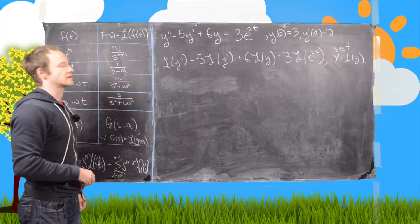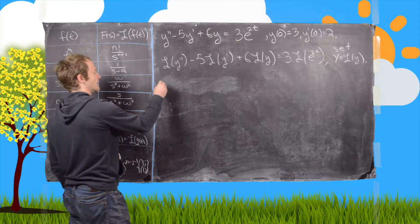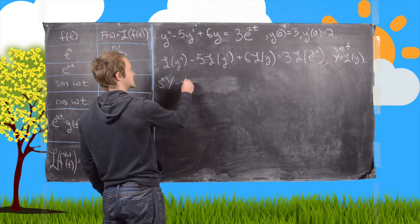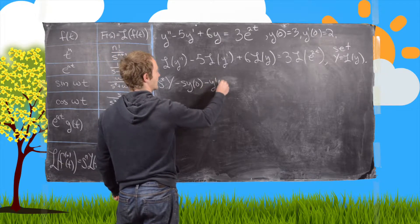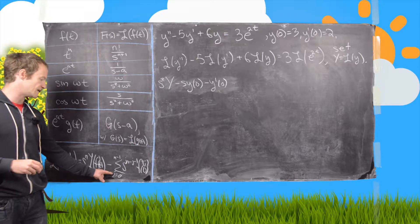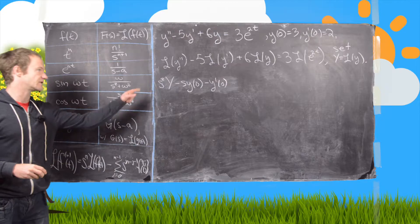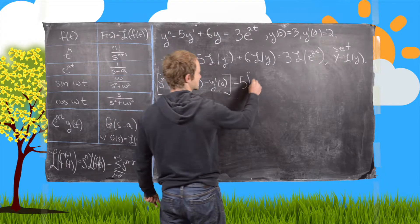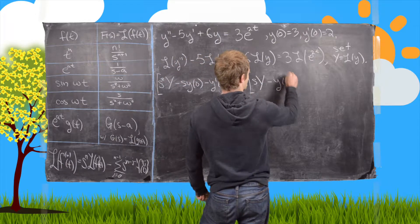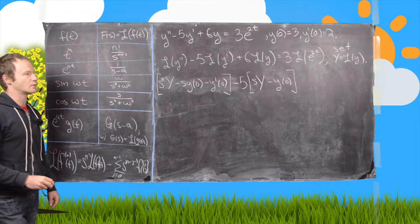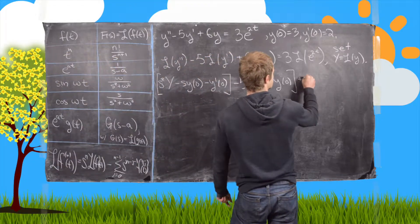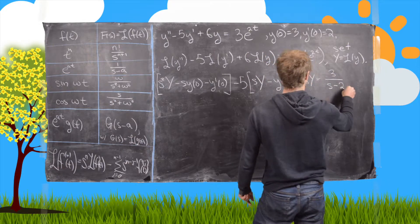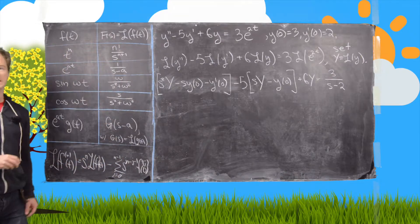Applying the Laplace transform formula to y double prime, we have s squared times capital Y, minus s times y evaluated at zero, minus y prime evaluated at zero — following the formula where the power of s decreases while the derivative order increases. Then for the y prime term we have minus 5 times (sY minus y evaluated at zero), plus 6 times capital Y. On the right-hand side we have 3 over s minus 2, from the Laplace transform of e to the at.